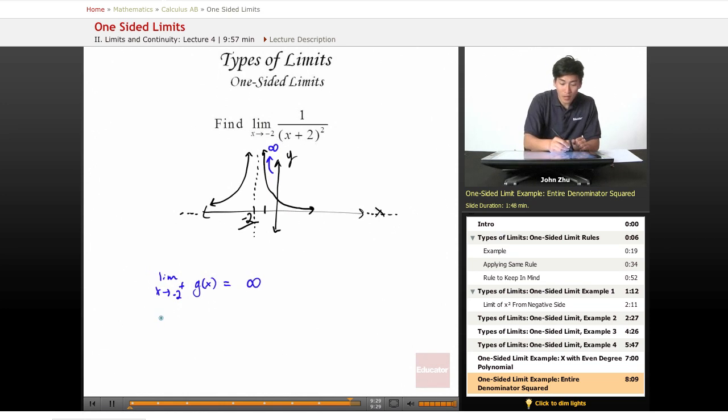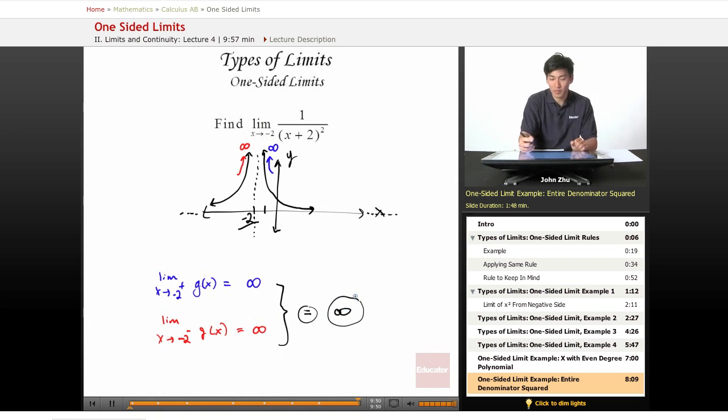And what about from the left side? x approaches negative 2 from the negative side. Well, this also approaches the asymptote towards infinity. So now we know that these two limits are equal, which means that infinity is our answer to the limit problem.